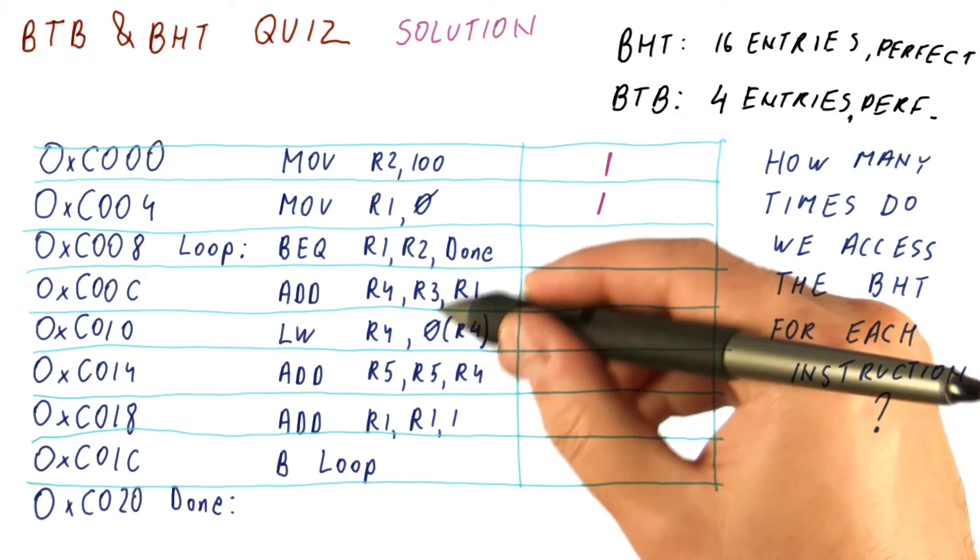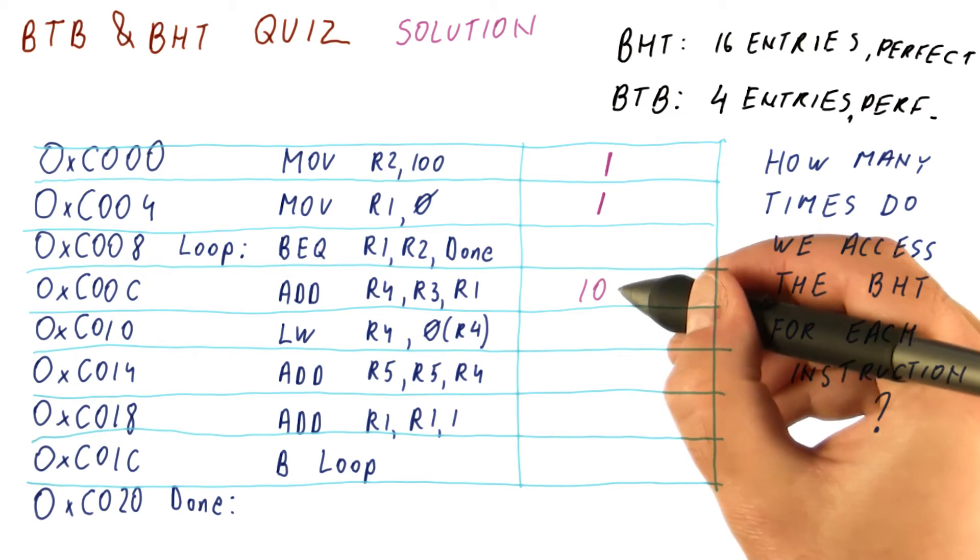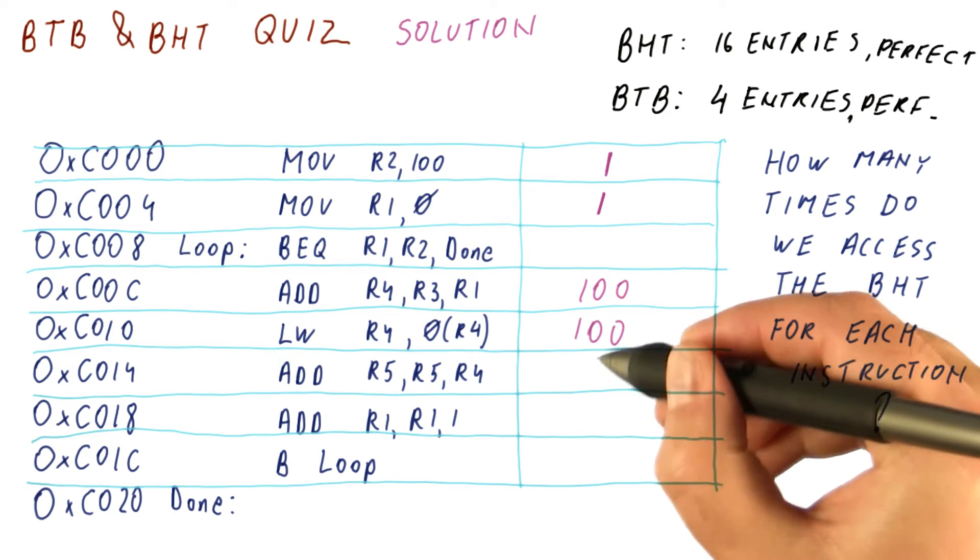So there is 100 iterations of this loop, and each of these instructions thus executes 100 times.